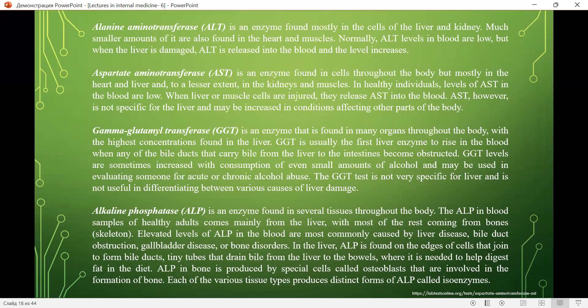ALT is an enzyme found mostly in cells of the liver and kidney, with smaller amounts in the heart and muscles. Normally ALT levels in blood are low, but when the liver is damaged, ALT is released into the blood and levels increase.